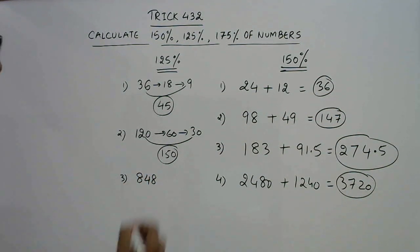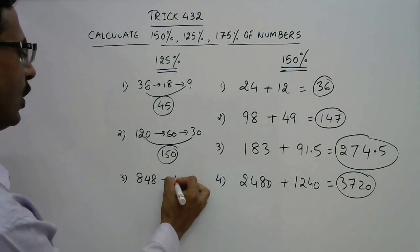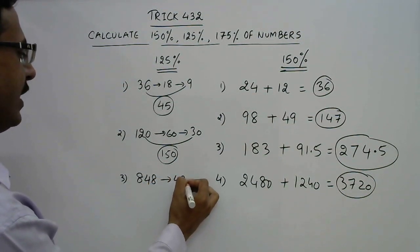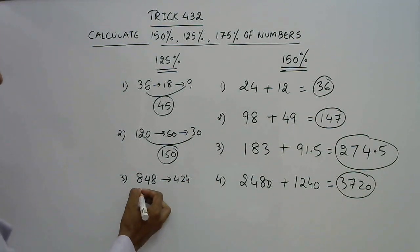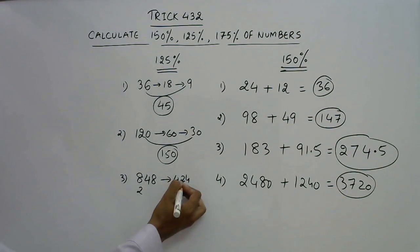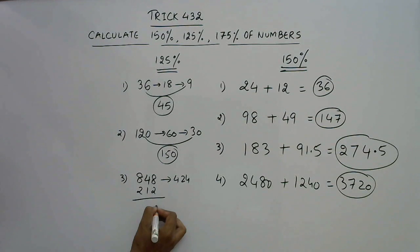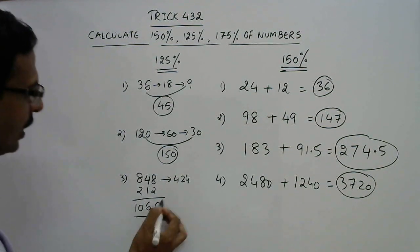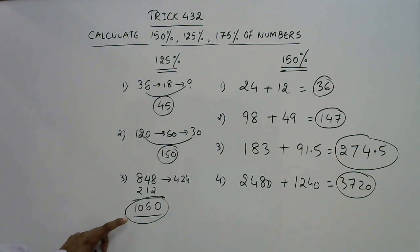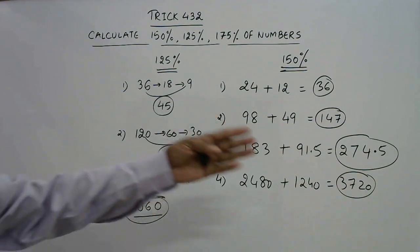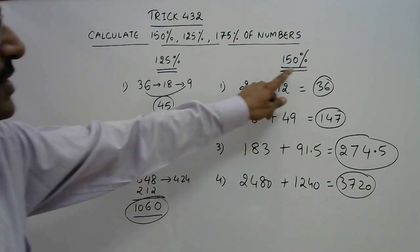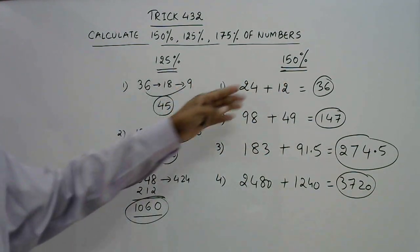Let's try a larger number: 848. Half of 848 is 424, and half of 424 is 212. Add 848 and 212 to get 1060, which is 125% of 848. So knowledge of 50% and 25% enables you to find 150% and 125% of any number.